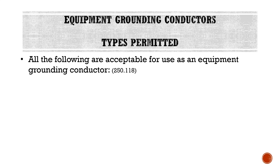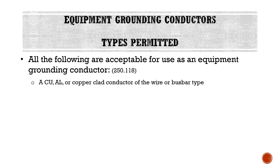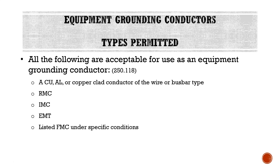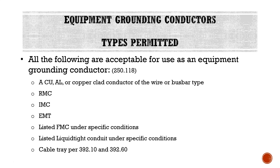Now we're going to talk about what we can actually use as an equipment grounding conductor. The following types are permitted: a copper, aluminum, or copper-clad conductor of the wire or bus bar type; RMC or rigid metal conduit; IMC or intermediate metallic conduit; EMT or electrical metallic tubing; listed FMC or flexible metal conduit under specific conditions; listed liquid-tight conduit under specific conditions; and cable tray per 392.10 and 392.60.